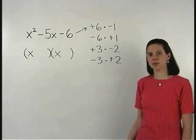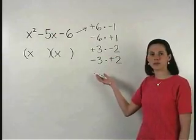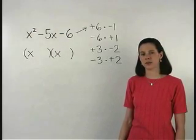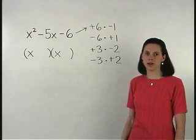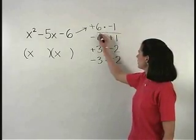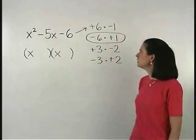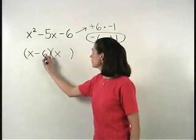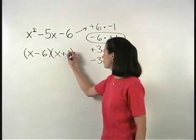This is a tricky problem because many of these pairs of factors look like they could add to negative five. But the only one that does is negative six times positive one. So our answer is x minus six times x plus one.